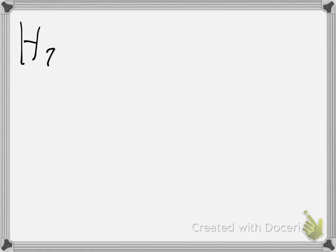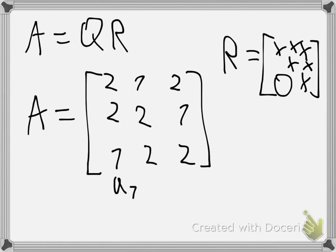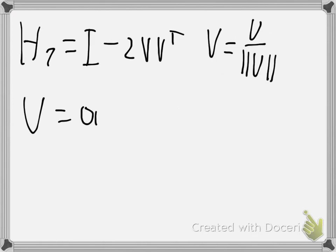So first let's find my first Householder transformation, which should be given by the identity matrix minus 2 times v times v transpose. And v will be equal to the vector u divided by its length, so v is a unit vector. And u will be given by the first column vector of A, so a1 minus its length times e1.